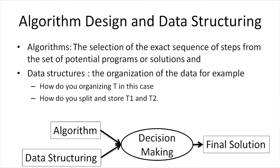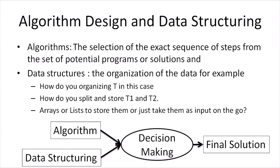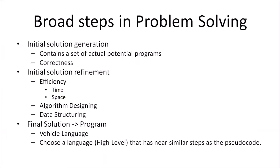Once you have an initial solution, there are standard and well-known ways to evaluate whether the solution is good or bad — this forms part of data structure and algorithms. Here we come across terminologies like algorithm designing and data structuring. Algorithms are the exact sequence of steps to be followed to get the solution, while data structuring is the organization of data in memory — for example, organizing T by splitting and storing as T1 and T2. Data structuring and algorithm design go hand in hand to give you the final, most efficient solution.